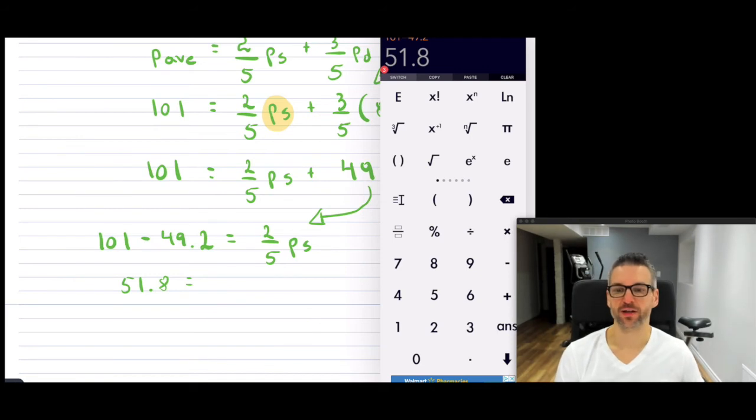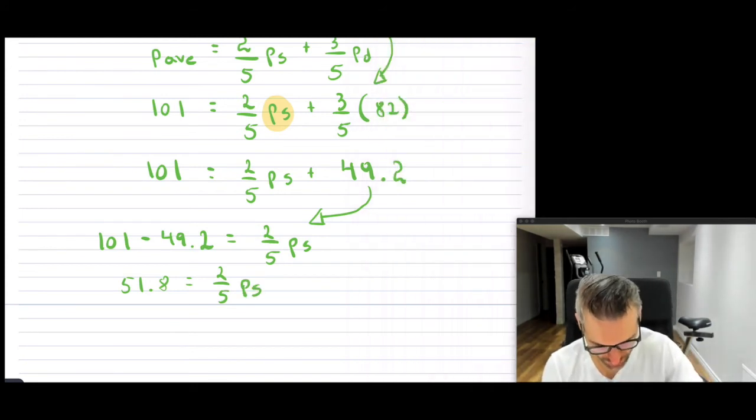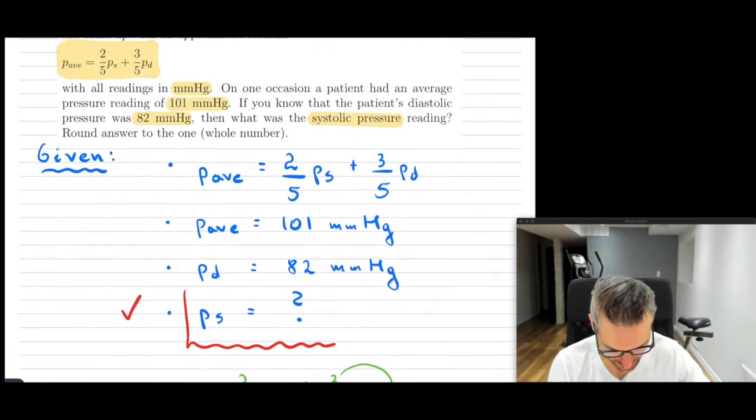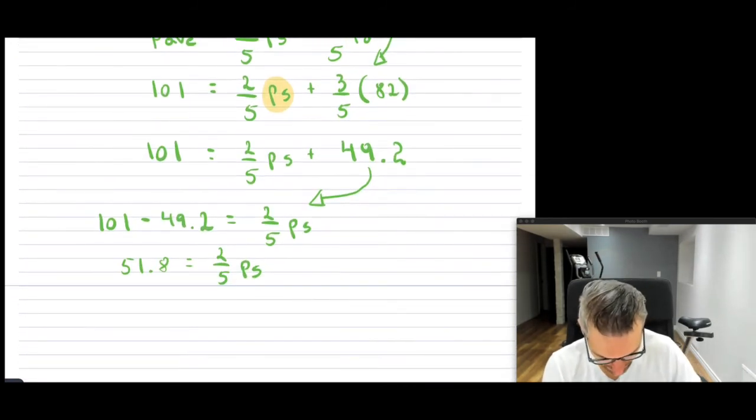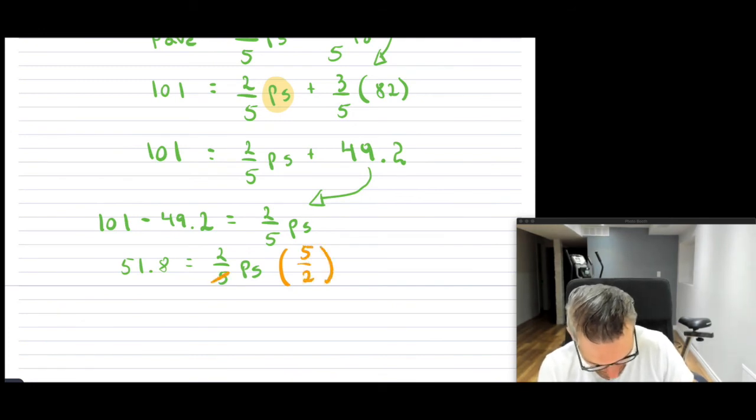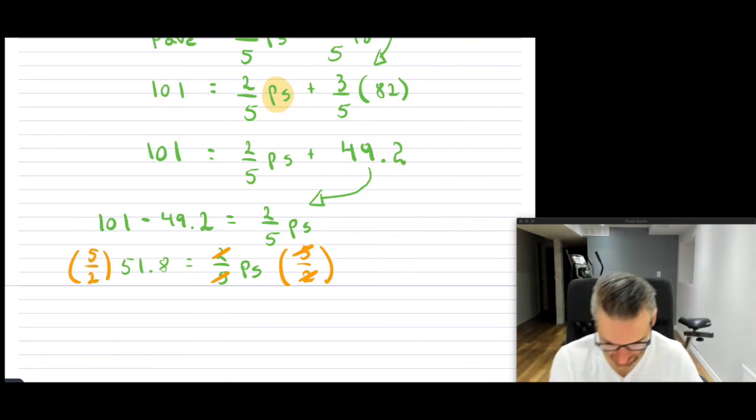Now to get rid of that 2/5, I can multiply both sides. You can always change it to a decimal in this question. It says round answer to the one, so we can round the whole things as well. We'll do that at the end. You can do that because it would cancel this out, but of course you also have to do it on the other side. And this would give you the result for PS.